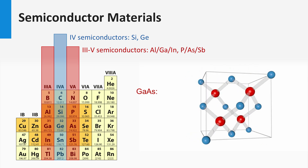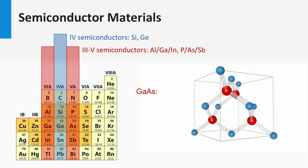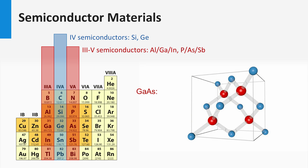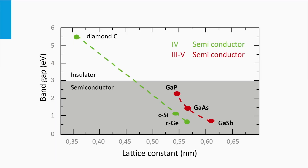Semiconductor properties can also be found in materials other than elements with four valence electrons. Consider the so-called 3-5 semiconductor materials, like gallium arsenide. A 3-5 semiconductor consists of two elements: one element has three valence electrons and the other has five valence electrons. These materials can form a diamond cubic crystalline lattice similar to silicon. In the crystalline lattice shown here, the gallium atoms are blue and the arsenide atoms are red. Every gallium atom neighbors four arsenide atoms, and every arsenide atom neighbors four gallium atoms. For 3-5 materials based on gallium — such as gallium phosphide, gallium arsenide, and gallium antimonide — the larger the lattice constant of the material, the smaller the band gap will be. Gallium phosphide has the smallest lattice constant and therefore the largest band gap.